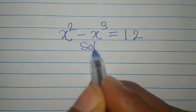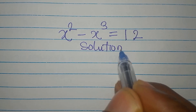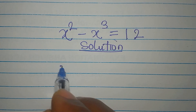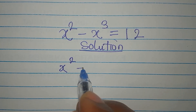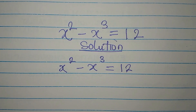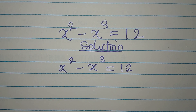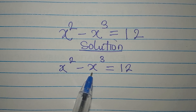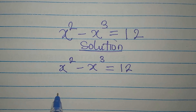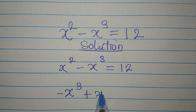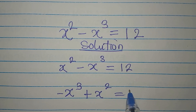Hello everyone. Let's provide the solution to this problem. We have x squared minus x cubed equals 12. I am of the opinion that we write the one with the highest power first. So we're going to have negative x to the power of 3 plus x to the power of 2 equals 12.